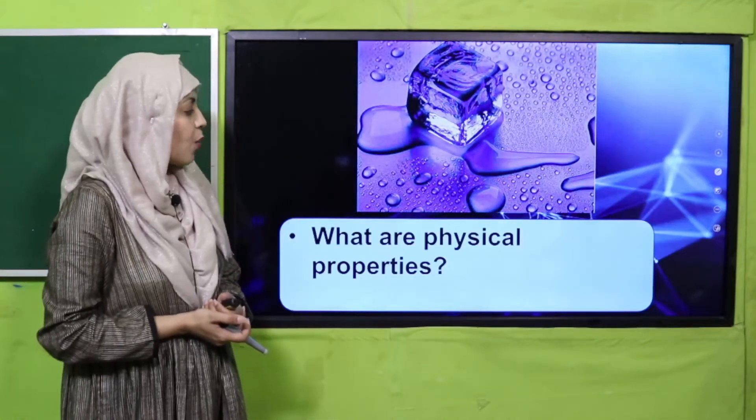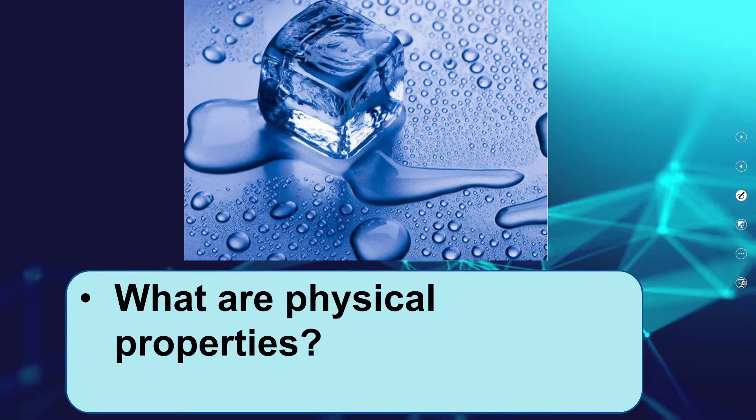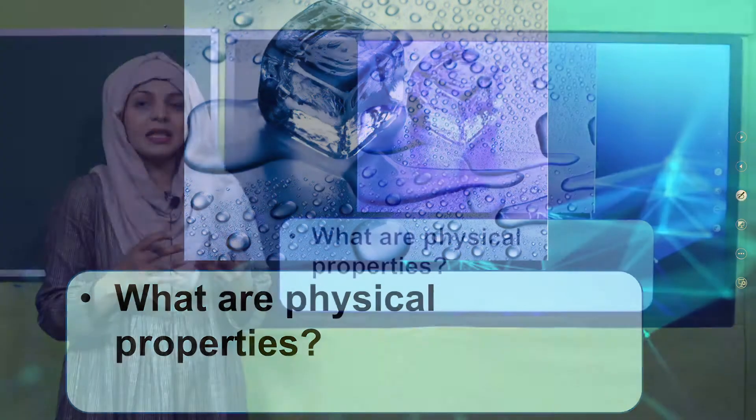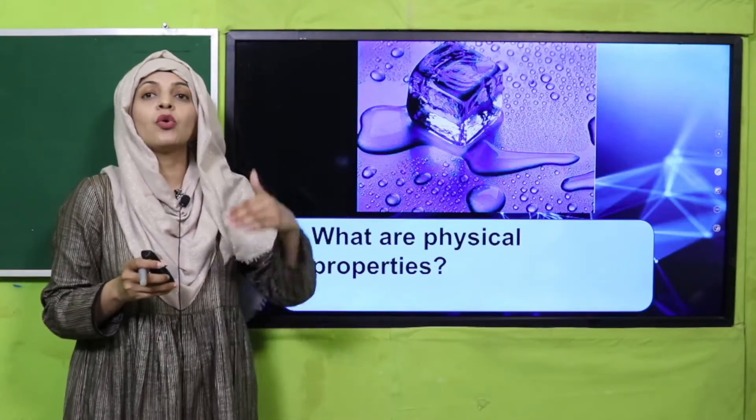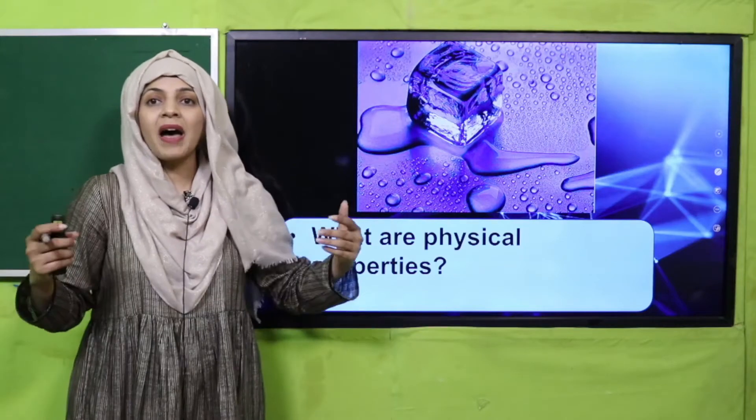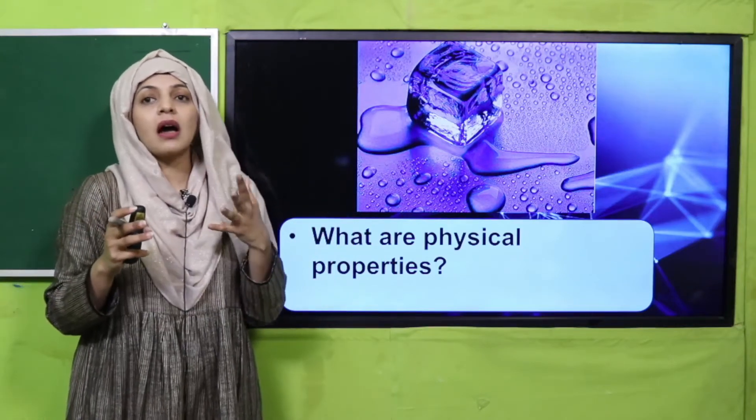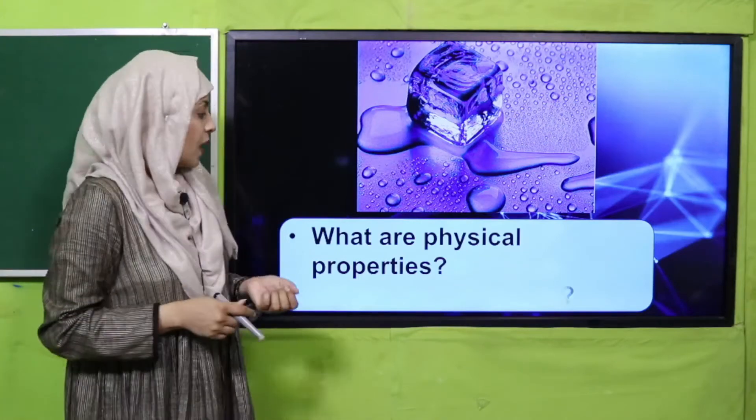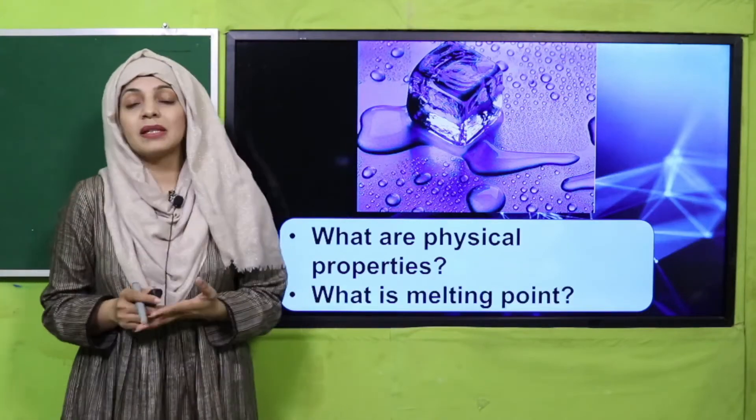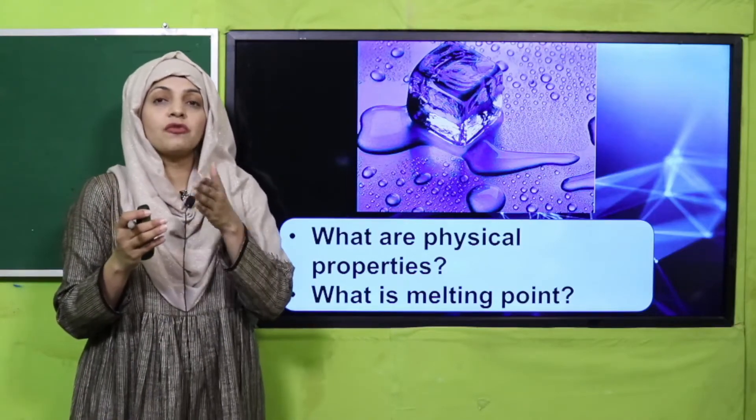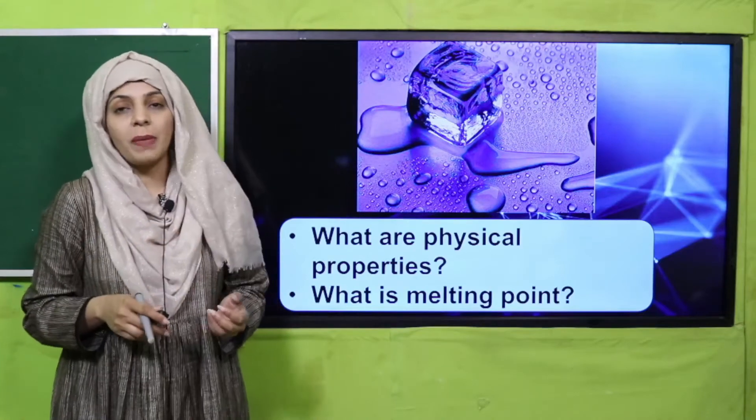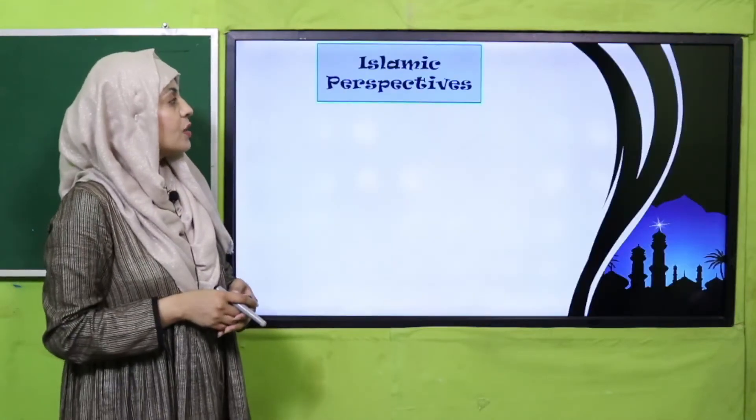Now let's quickly move forward towards the activities. Look at this picture and tell me what are physical properties. For example, physically how do you look - tall, small, fat, or slim? These are the physical properties of a thing. What is melting point? When we increase the temperature and the thing changes from solid to liquid, this is called melting point.